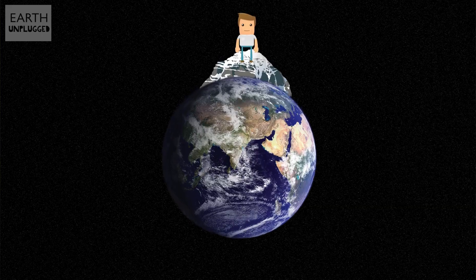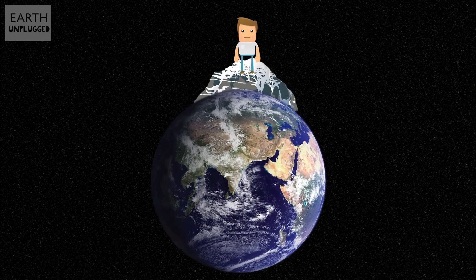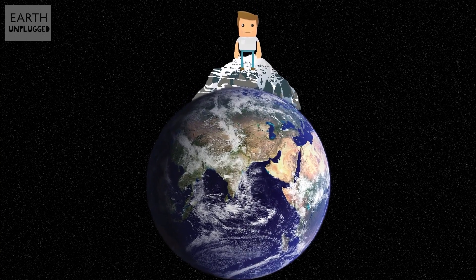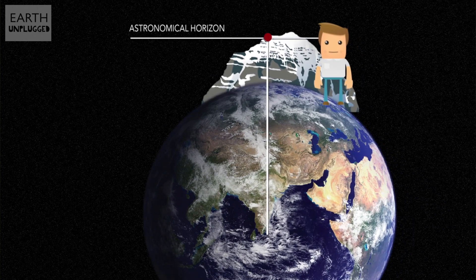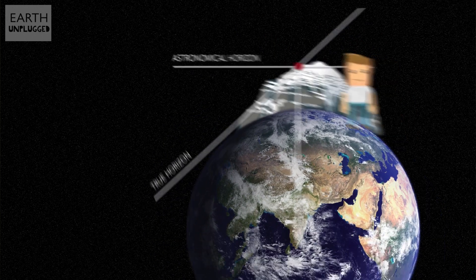Around a thousand years ago, Persian scholar Al-Biruni managed to measure the radius of the Earth with incredible accuracy. Sat on the top of a mountain, he measured the angle between the astronomical horizon, which is perpendicular to straight down, and the true horizon, where the land stops. Knowing only the height of the mountain and a handful of angles, he was able to work out the radius of the Earth using trigonometry.